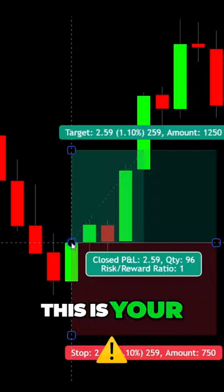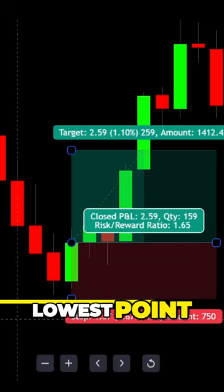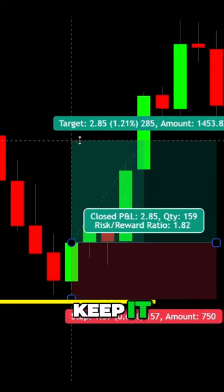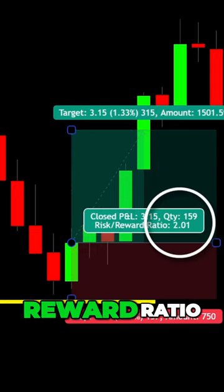When the candle closes, this is your entry signal. The stop loss is placed under the lowest point of the down move. And if you want to keep it simple, you can place your target at a 2 to 1 risk to reward ratio.